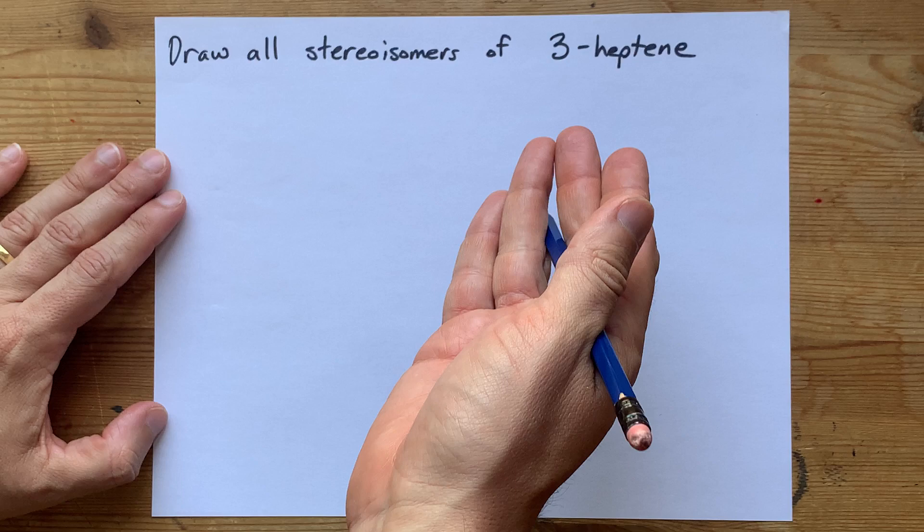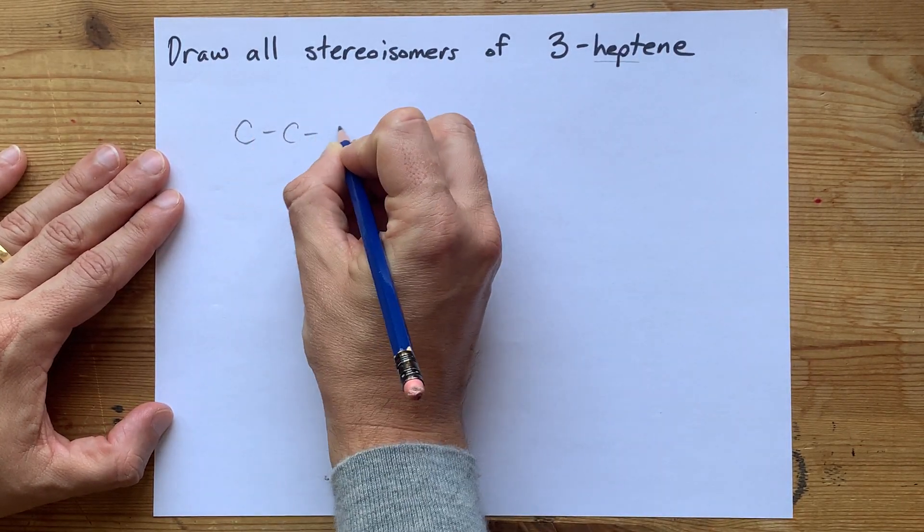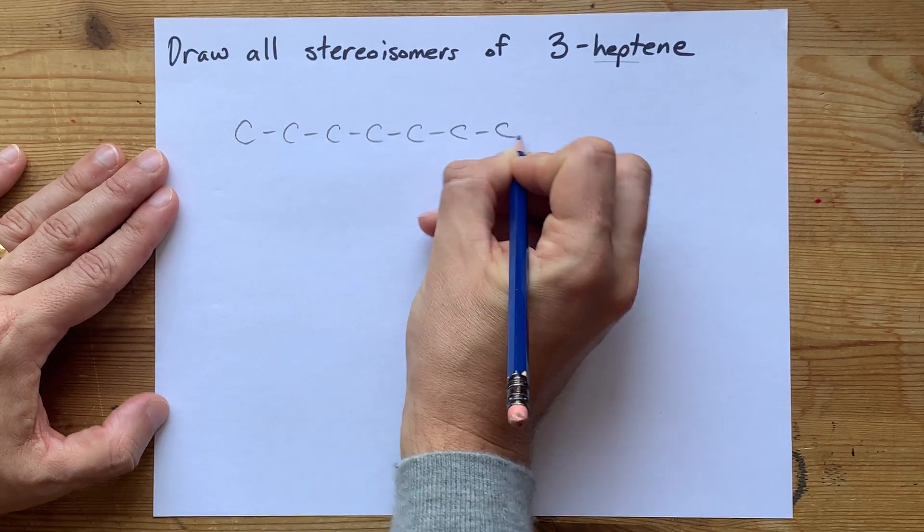Let's draw the molecule to see what we're up against here. Hept means seven carbons in a chain. Five, six, seven.